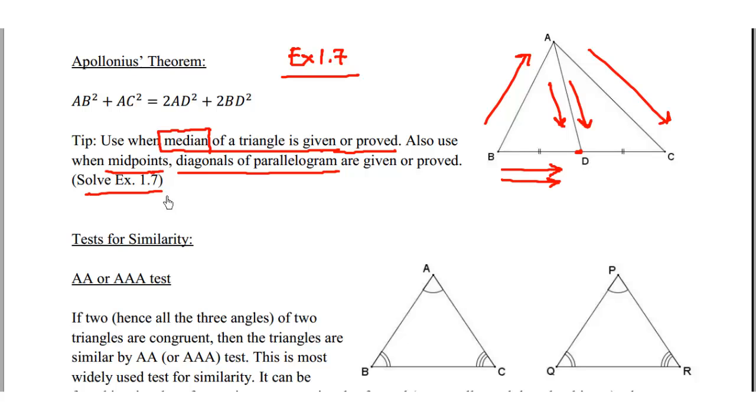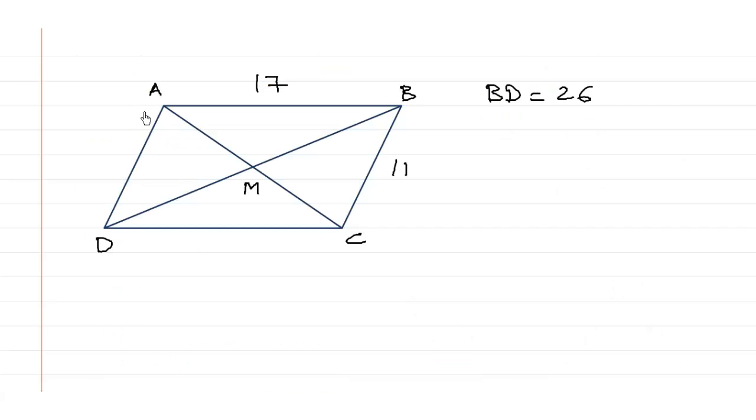So we solve this exercise 1.7 with Apollonius theorem to get the desired answers. For example, suppose ABCD is a parallelogram and the adjacent sides are given to be 11 and 17 and one of the diagonals, let's say BD, is given to be 26.